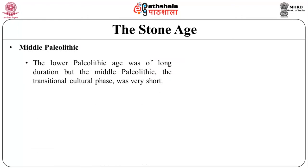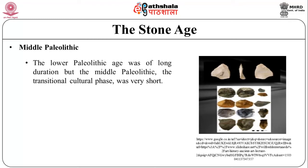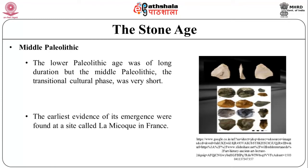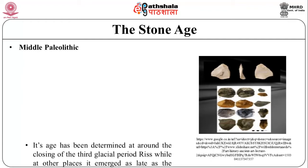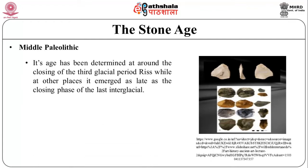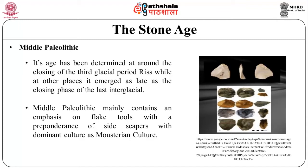The Lower Paleolithic age was of long duration, but the Middle Paleolithic, a transitional cultural phase, was very short. In many regions of the world, this could only be identified as an independent cultural phase as late as the 1960s. Even in Europe, at many places it could not be distinguished on the basis of different cultural material. The earliest evidences of its emergence were found at a site called La Micoque in France, dated to around the closing of the third glacial period, Riss, while at other places it emerged as late as the closing phase of the last interglacial. The Middle Paleolithic mainly contains an emphasis on flake tools with a preponderance of side scrapers.